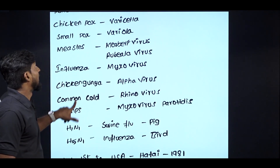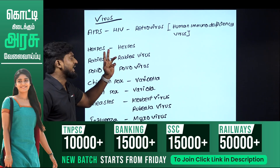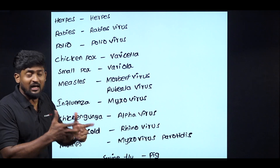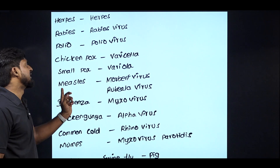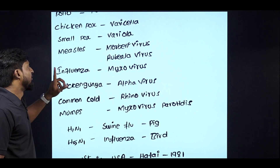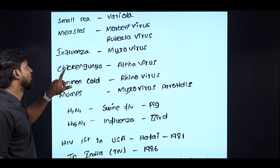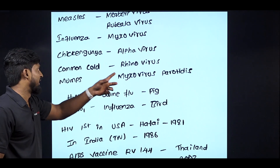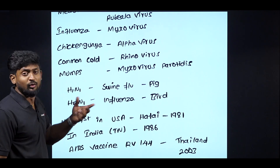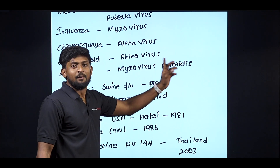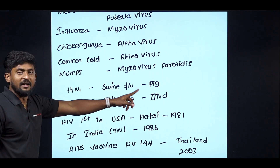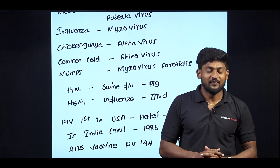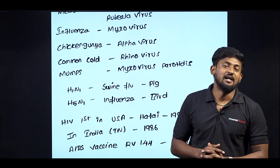In this video, we have seen shortcuts for: AIDS/HIV — Retrovirus; Herpes — Herpes virus; Rabies — Rabies virus; Polio — Polio virus; Chickenpox; Smallpox; Measles — Morbilli and Rubella virus; Influenza — Myxovirus; Chikungunya — Alphavirus; Common cold — Rhinovirus; Mumps — Myxovirus/Parotitis; H1N1 Swine Flu; H5N1 Bird Flu. HIV was first reported in the US, and also in Tamil Nadu in India. This video will be useful for you. See you in the next video.